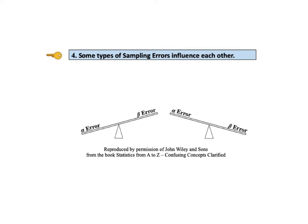Key to understanding number four says some types of sampling errors influence each other. In inferential statistical tests, we need to select a value for alpha — the maximum probability of a false positive we are willing to accept. Alpha equals 0.05, or 5%, is the most common selection. But why not make it 1%? Because the probability of alpha errors and beta errors affect each other inversely: if one goes down, the other goes up. Reducing alpha increases the probability of a beta error, or false negative.